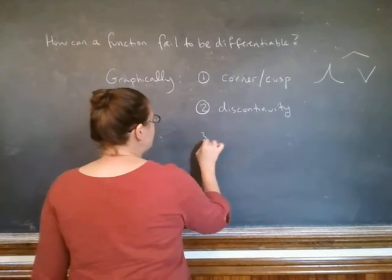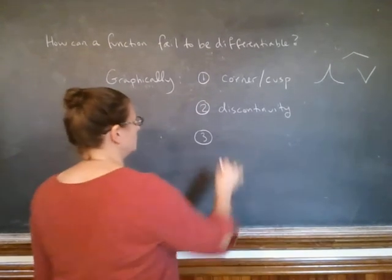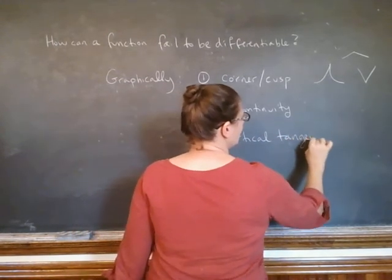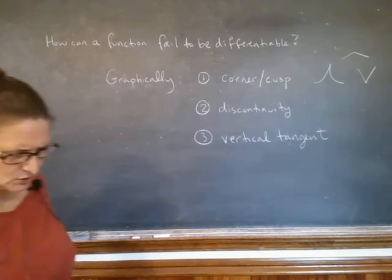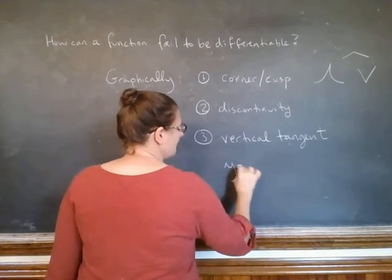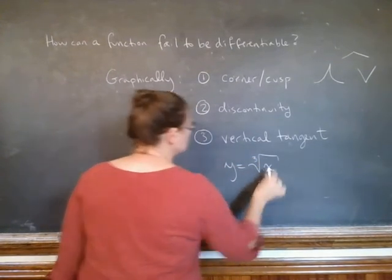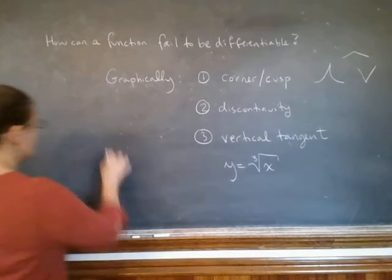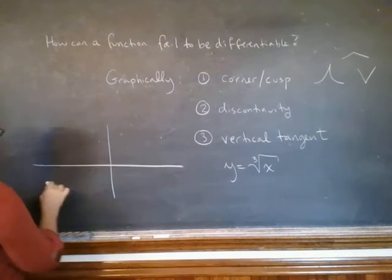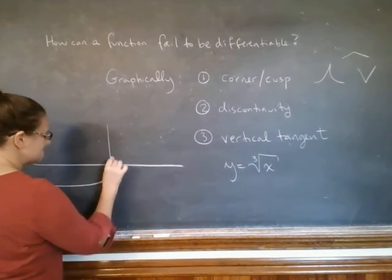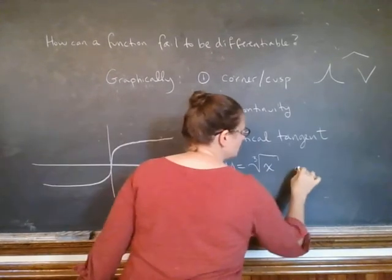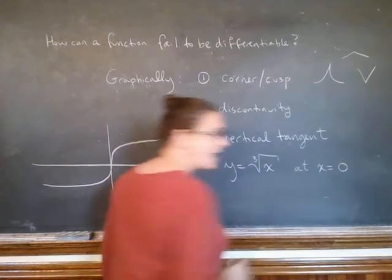The third one, which is a little bit more unusual, is a vertical tangent. So, I'll have to tell you what that is. I'm going to illustrate with a function. My function is going to be the cube root of x. That's a great function for this. Definitely, go and look at this on Desmos or a graphing calculator. What you'll see is that at x equals 0,